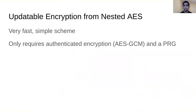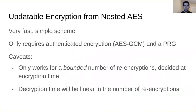Our first construction is an updatable encryption scheme from nested AES. It is very fast and simple, requiring only authenticated encryption and a PRG — both buildable from hardware-accelerated AES. A caveat is that it only works for a bounded number of re-encryptions: at ciphertext creation time you must know how many times it will be re-encrypted over its lifetime. Another caveat is that decryption time is linear in the number of re-encryptions, since you must unwrap each layer one by one.